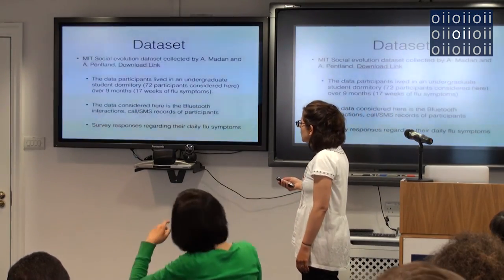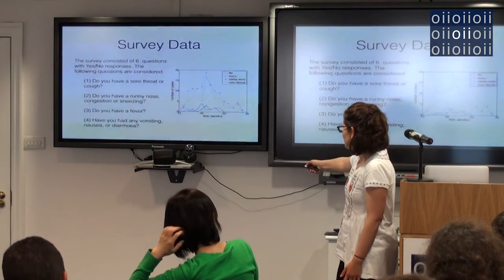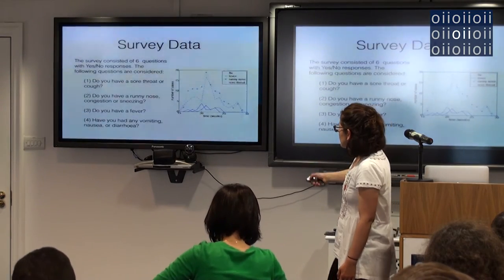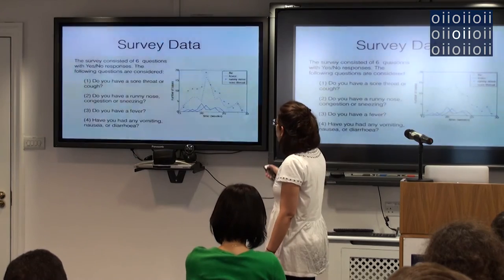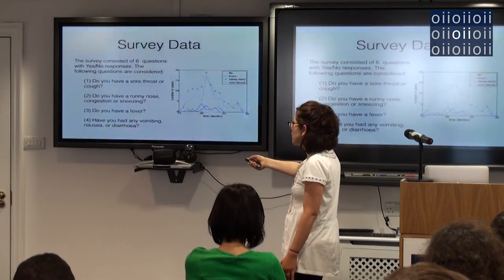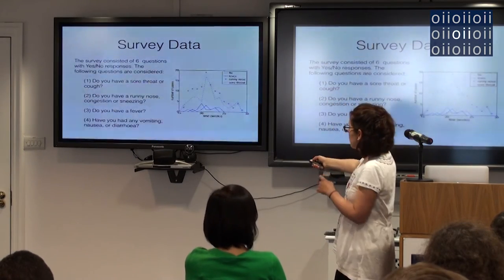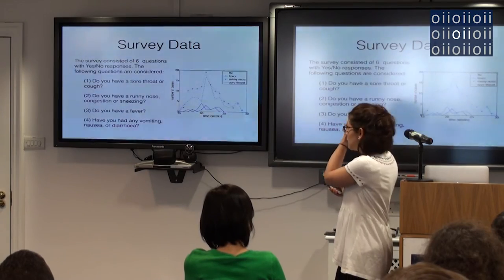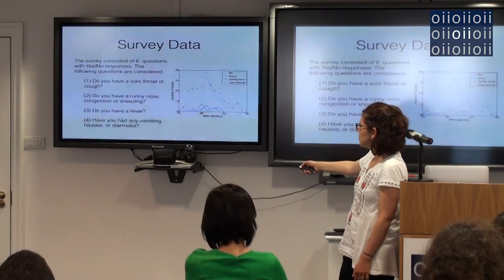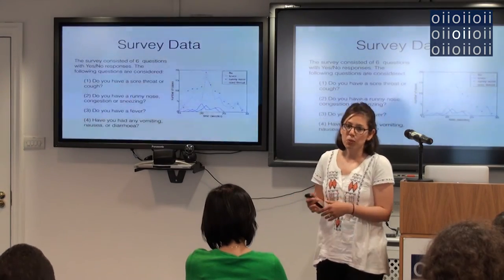Here is how people responded to the survey questions on flu over the 17-week period. Basically they were asked these four questions: Do you have a sore throat or a cough? Runny nose, congestion, or sneezing? Do you have a fever? Or do you have any vomiting or diarrhea? When we're doing the epidemic simulations, we assume that if they answered yes to any single one of these questions, they were considered to be ill — and that's what we're looking for in the simulations.